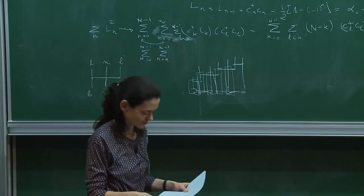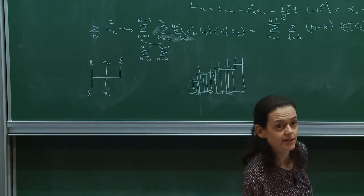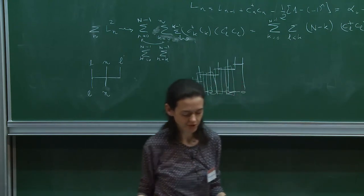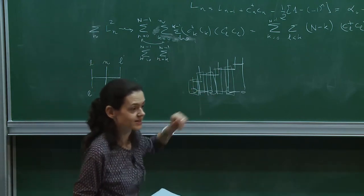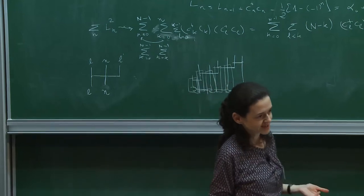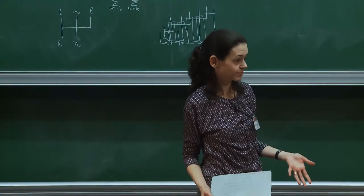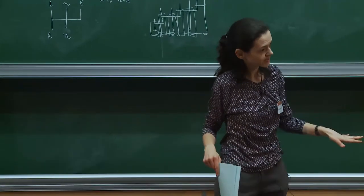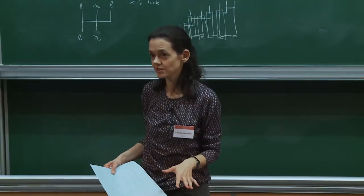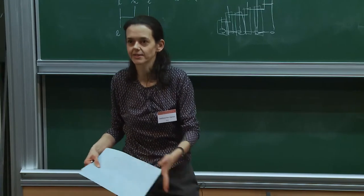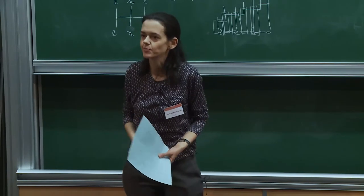We applied this formalism to the Schwinger model and got good results. You can also use it for generalizations with several flavors, which gives access to the simplest situation where Monte Carlo calculations have a sign problem: even in 1D, with several flavors and different chemical potentials, Monte Carlo will generally have a sign problem.